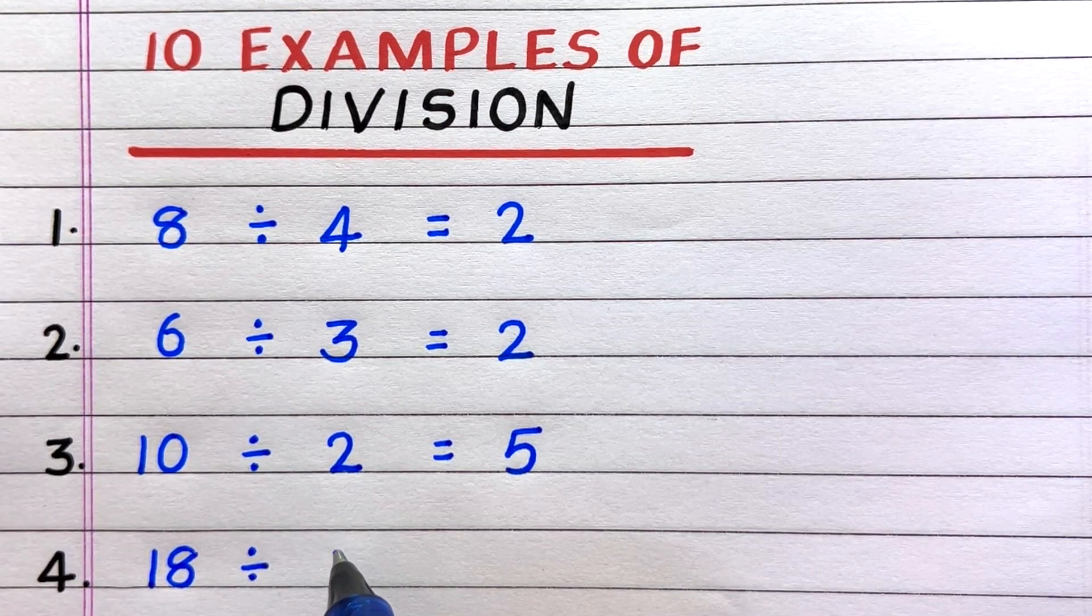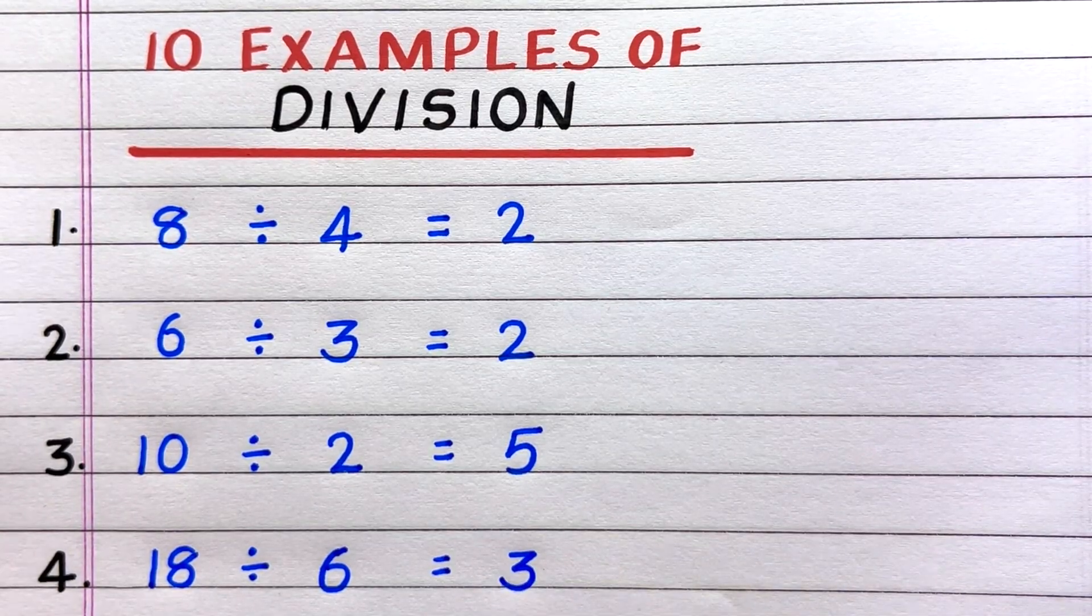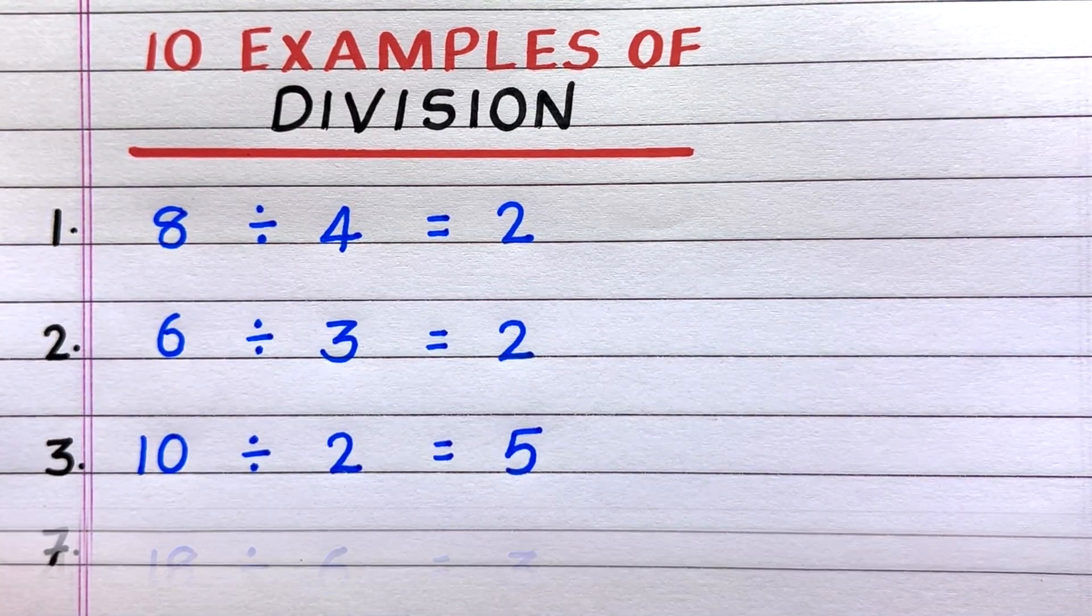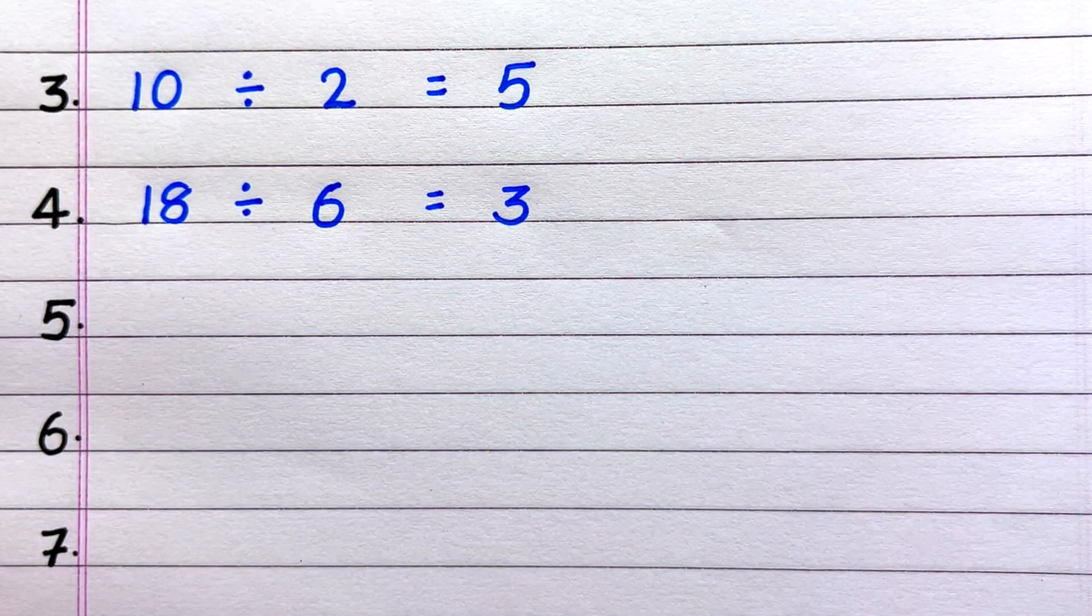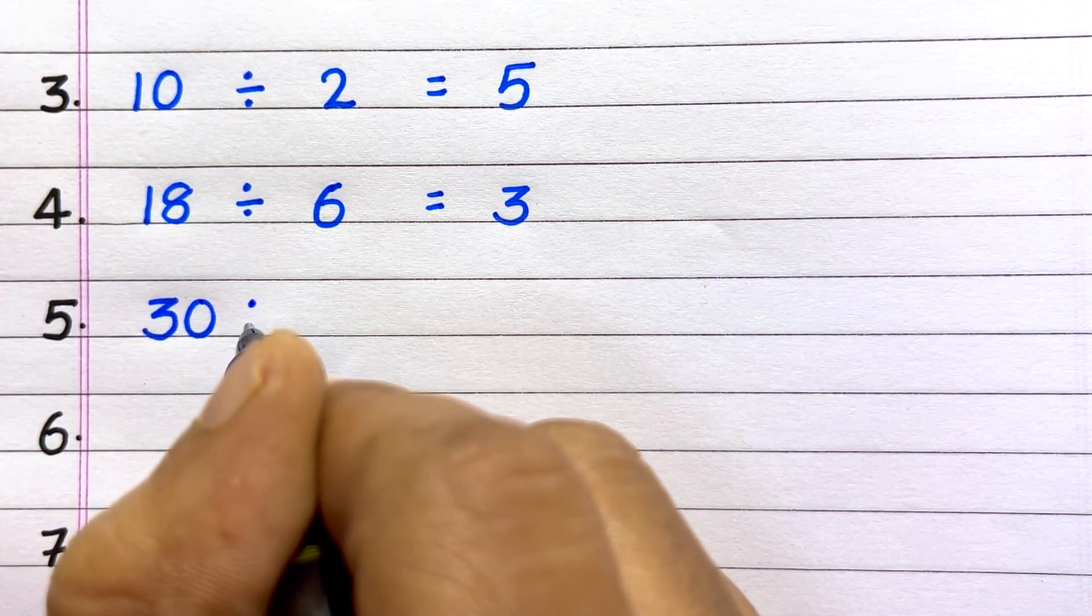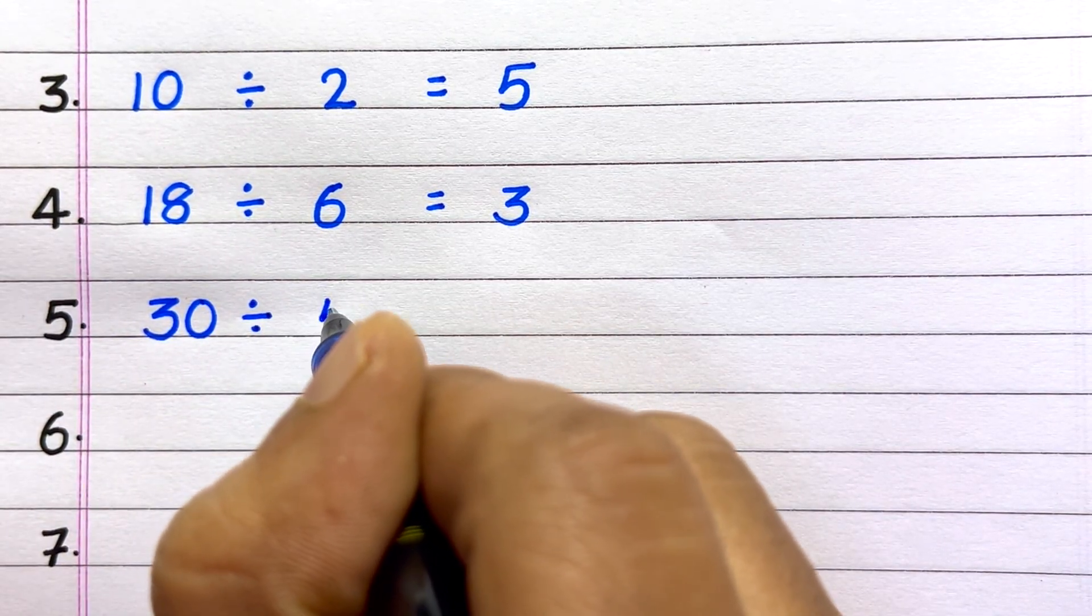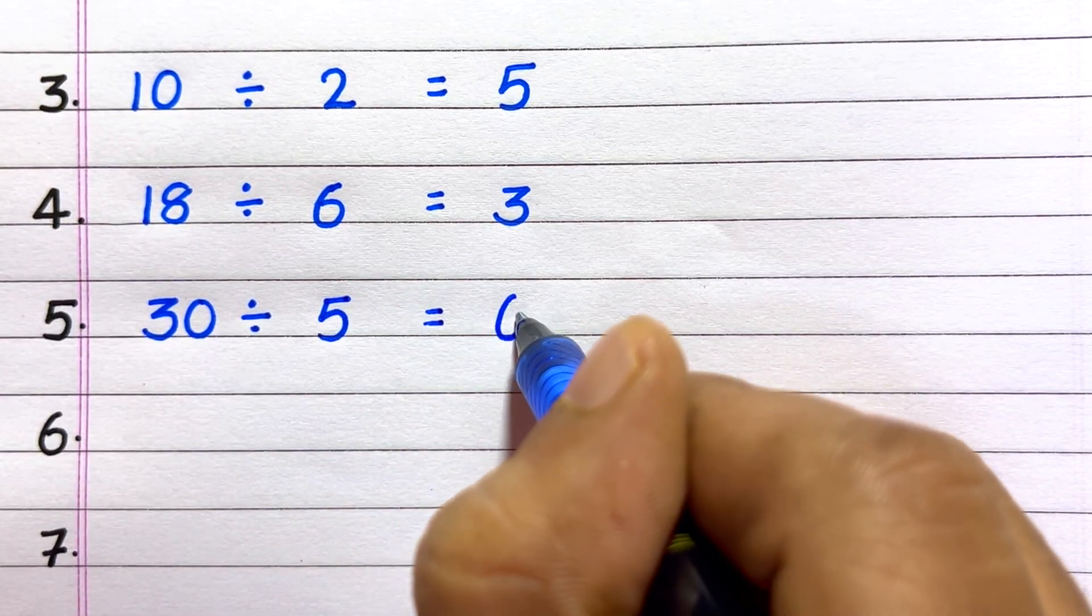Fourth, 18 divided by 6 equals 3. Fifth, 30 divided by 5 equals 6.